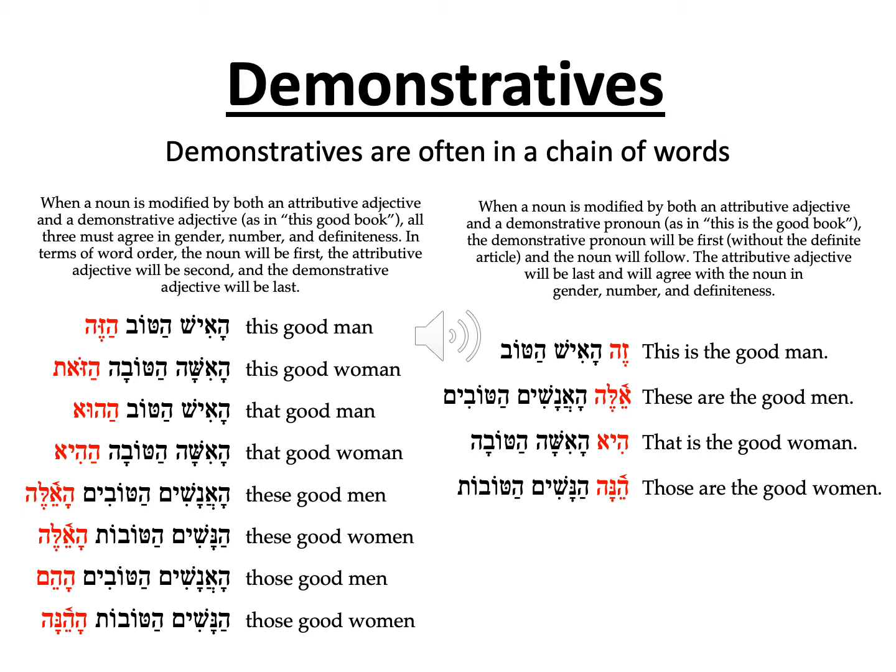In a string of adjectives, demonstrative adjectives will come last, after all other adjectives. Demonstrative pronouns will come first, even before the first word in the chain. Again, adjectives will agree in definiteness with the rest of the chain. Demonstrative pronouns will not agree in definiteness.